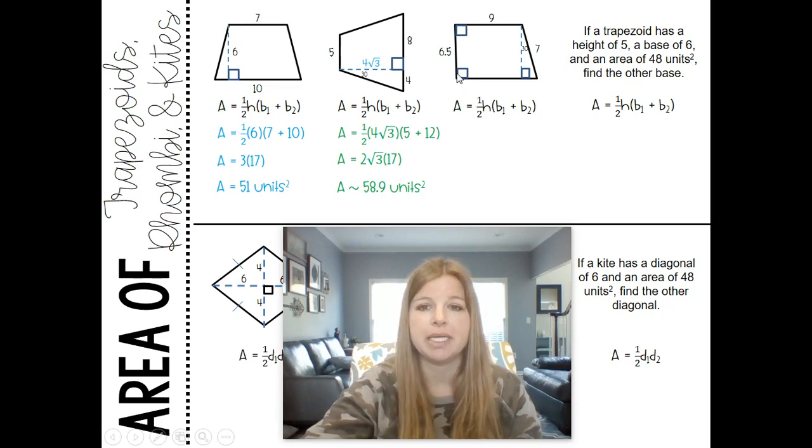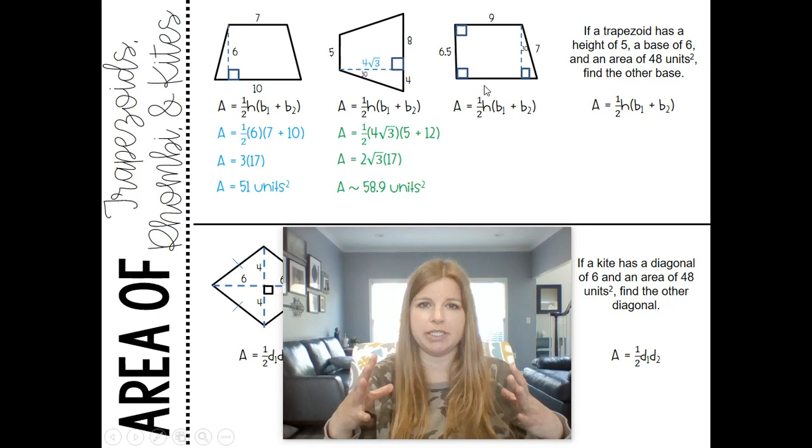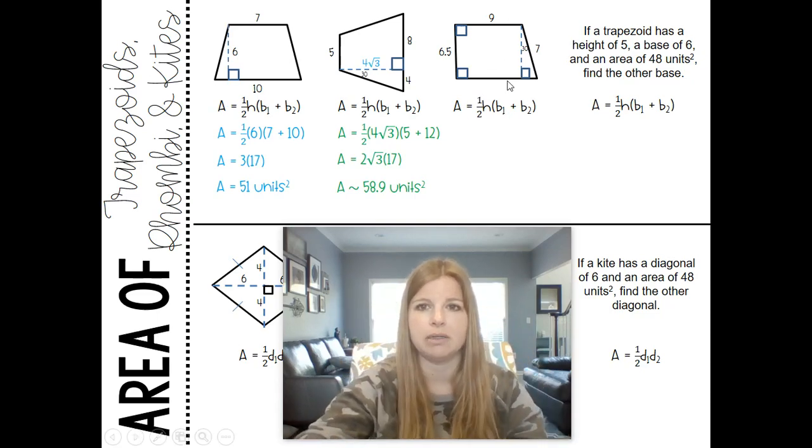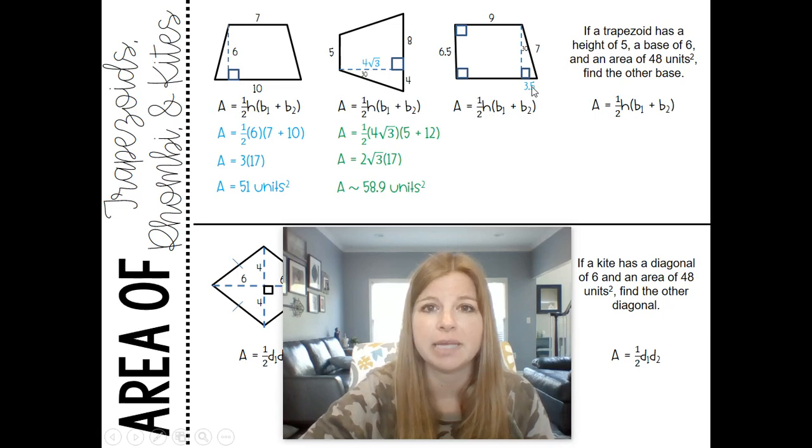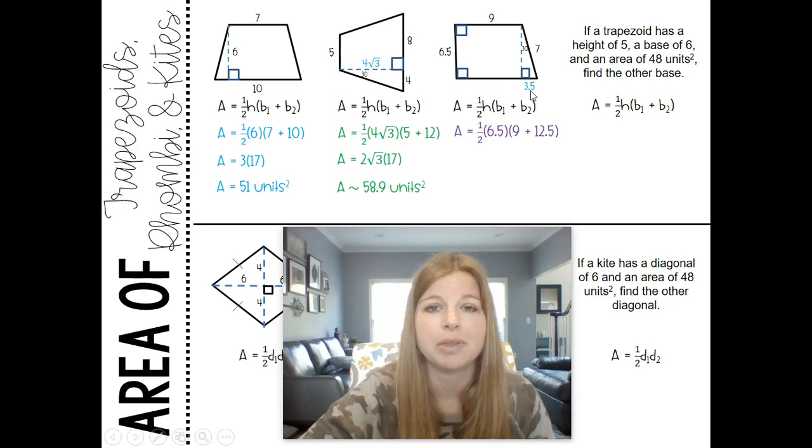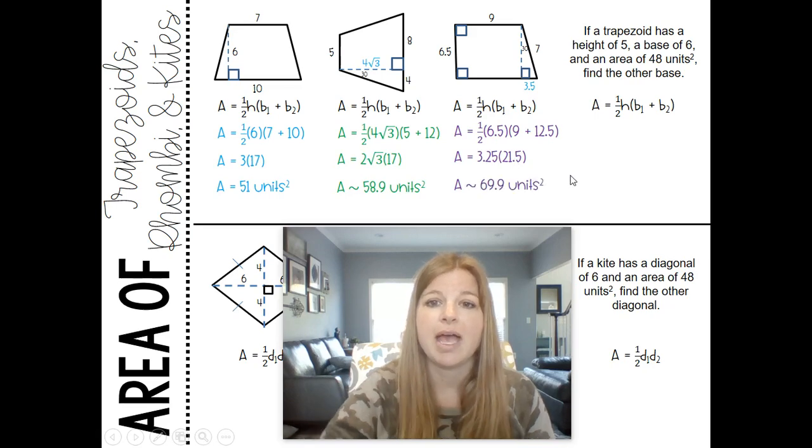This one here, this is a right trapezoid. So what ends up happening here in a right trapezoid is you have two right angles in the trapezoid. That would signify that this 6.5 is actually my height. I have a base of nine, but now this base here—so what happens inside of a right trapezoid is you end up having this built-in rectangle. I have this hypotenuse of seven, and the side opposite 30 is half of it, so this little segment here is 3.5. So it would be one half times 6.5, is my height, times the base of nine plus this entire base would be nine plus that 3.5. Half of 6.5 is 3.25, add that up I get 21.5, and when I multiply them together, round it to the tenths place, I get 69.9 units squared.